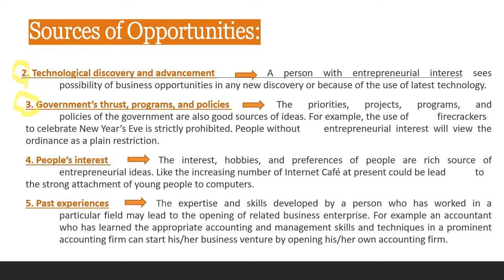The third source is government programs and policies. The priorities, projects, programs, and policies of the government are also good sources of ideas. For example, when the use of firecrackers was prohibited for New Year, entrepreneurs saw it as an opportunity to sell horns and noise-makers instead. Another example: when the government required the use of face shields, entrepreneurs came up with the idea to sell them.